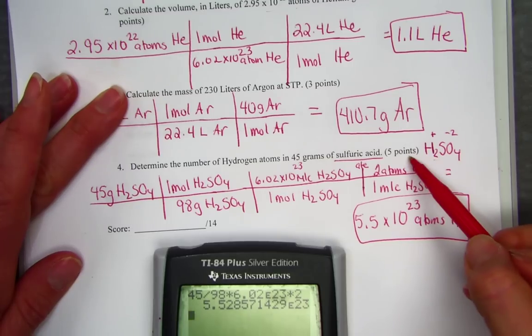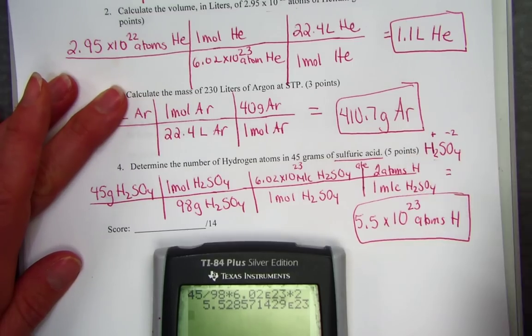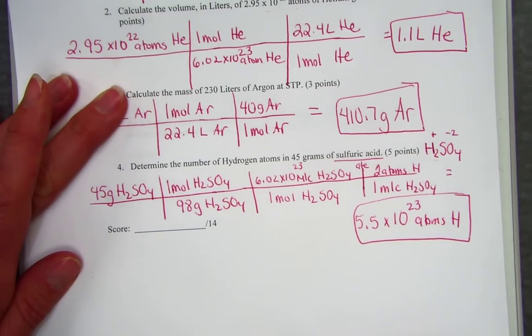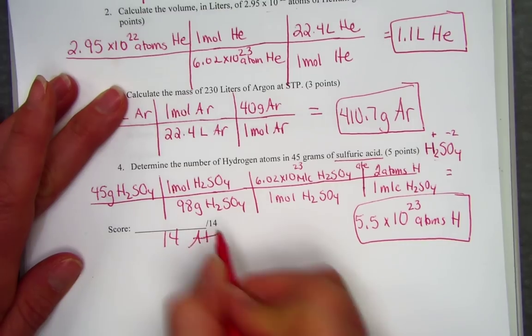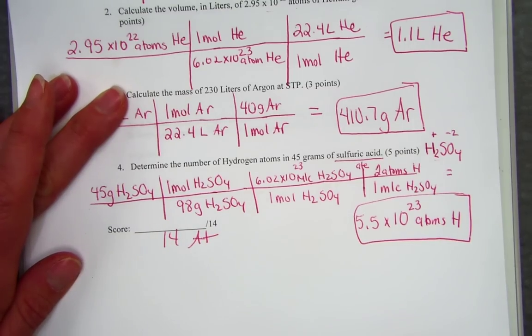That problem involved a little extra step. I could see it was worth more points than the others. So there's our A-plus on Objective 7: two-step mole conversions.